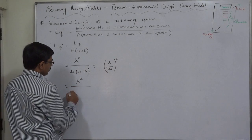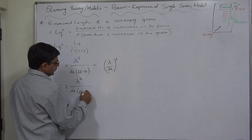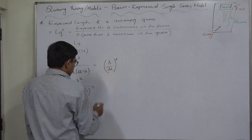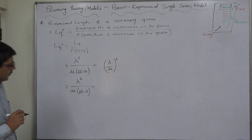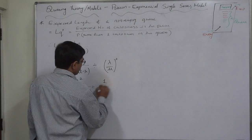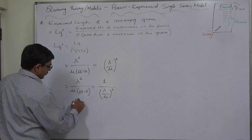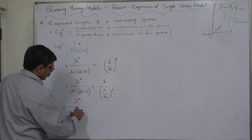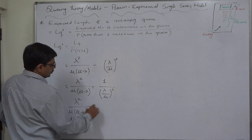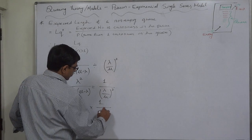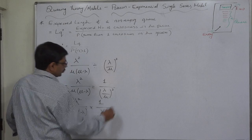Lambda square upon mu into mu minus lambda is equal to 1 upon lambda square upon mu minus lambda, into 1 upon lambda square upon mu square.